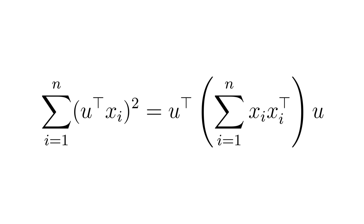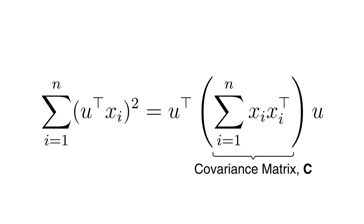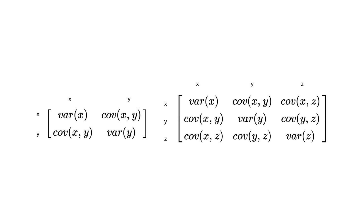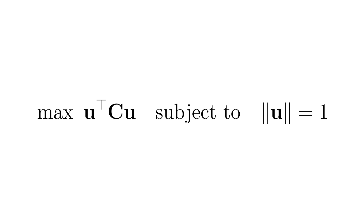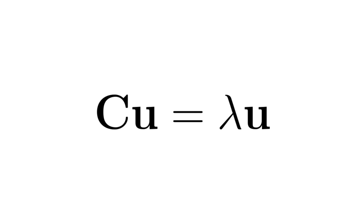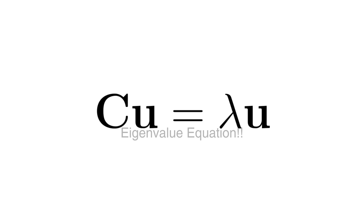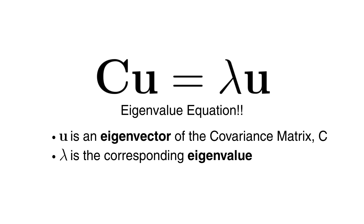Now this sum can be rewritten using the covariance matrix C. The covariance matrix tells us how each attribute varies with every other attribute across the dataset. So the optimization problem becomes: maximize u-transpose C u, subject to the magnitude of u being 1. We add this constraint to ensure u is a unit vector. This is a classic optimization problem, and the key takeaway is that the solution comes down to finding vectors u that satisfy the eigenvalue equation Cu = λu, where u is an eigenvector of the covariance matrix C and λ is the corresponding eigenvalue.